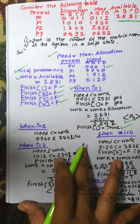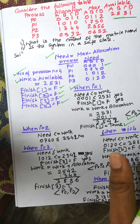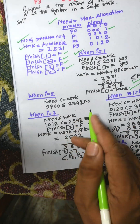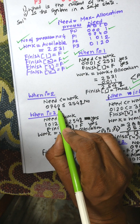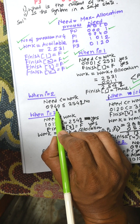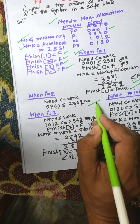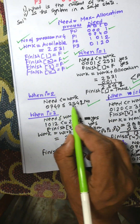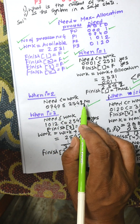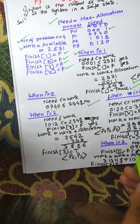When i = 2 (P1), we check Need ≤ Work. Need is 0, 7, 4, 0, but Work is 2, 5, 4, 2. Checking: 5 is not greater than or equal to 7, so it is false. If any one resource check is false, the total comparison is false. So P1 cannot proceed now.